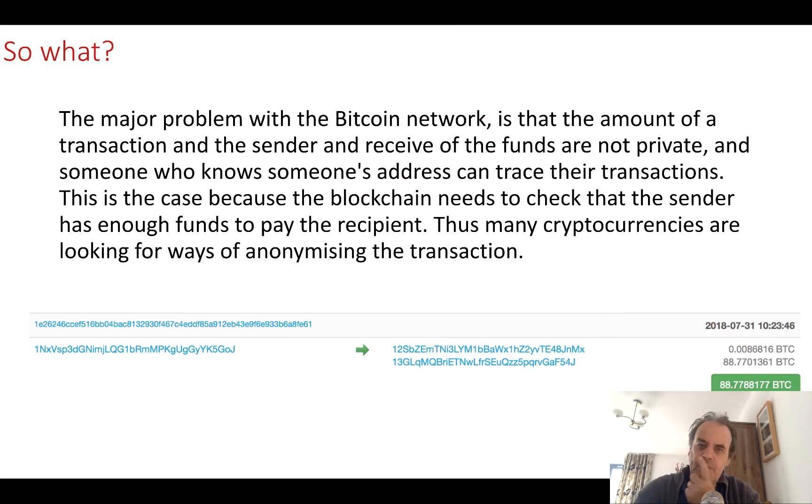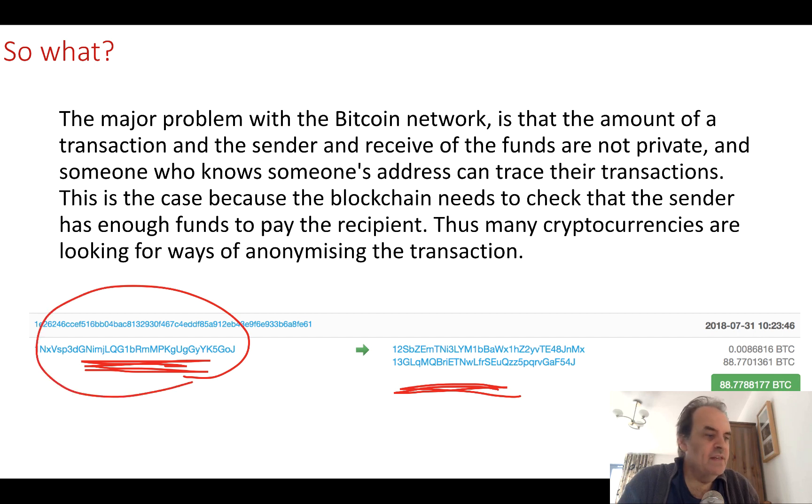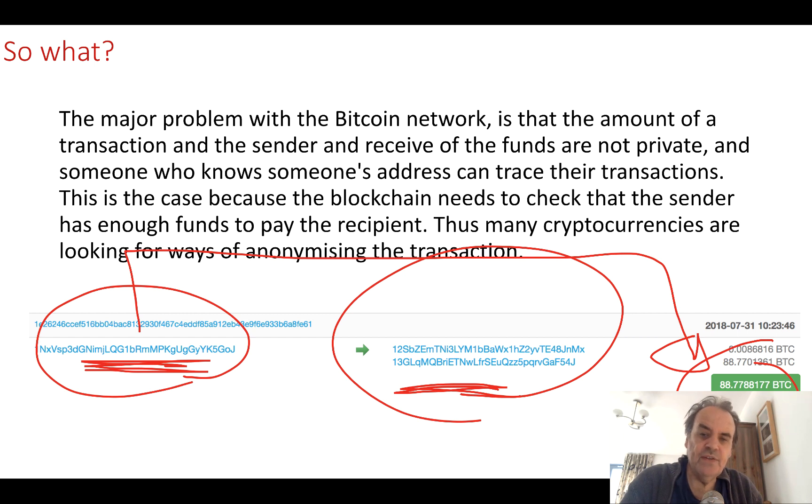So why is this so significant these days? Well the major problem that we have with our Bitcoin network is that we reveal so much of a transaction. Because we have a public blockchain, in this case we identify the sender of the transaction, we identify the receivers, and we identify the actual value of the transaction. So Bitcoin needs to know this because it needs to know that this entity has at least this amount of Bitcoins in its account before the miners can approve the transaction.